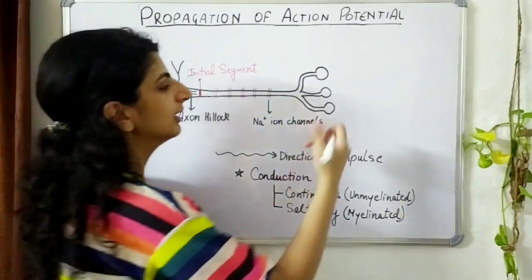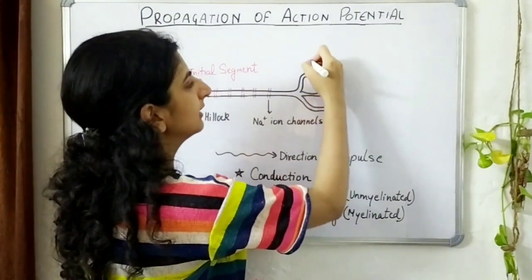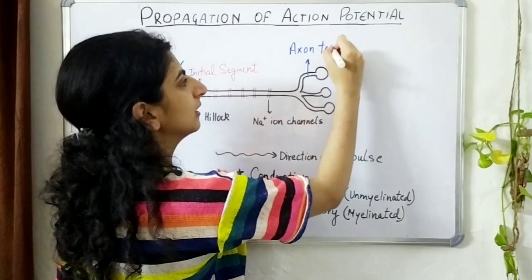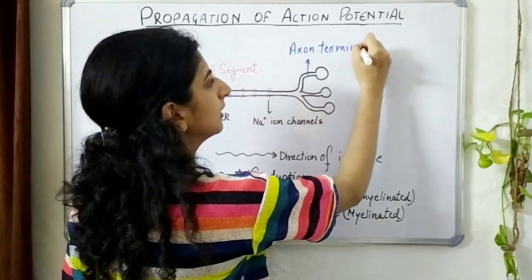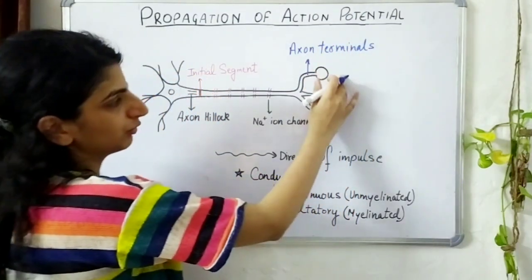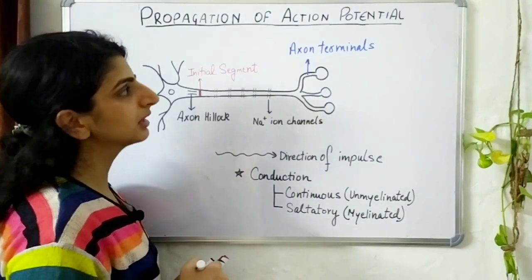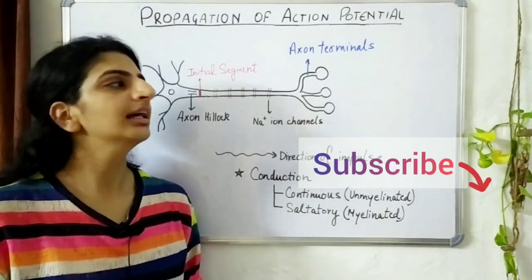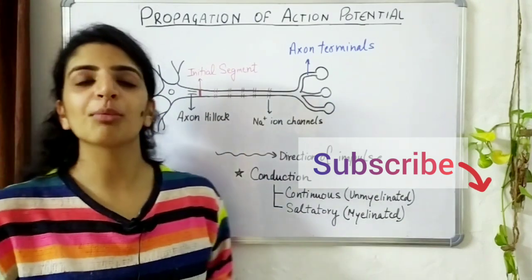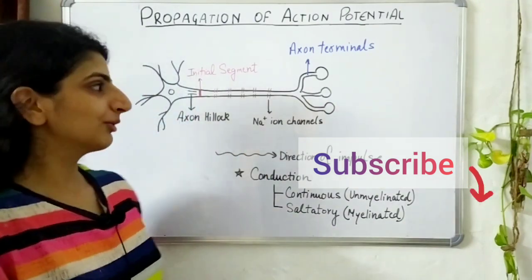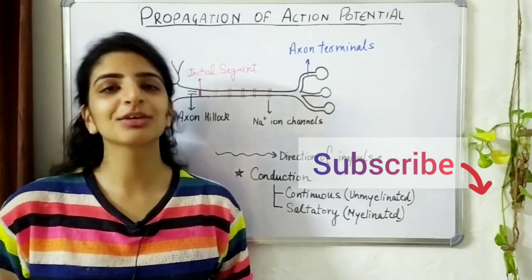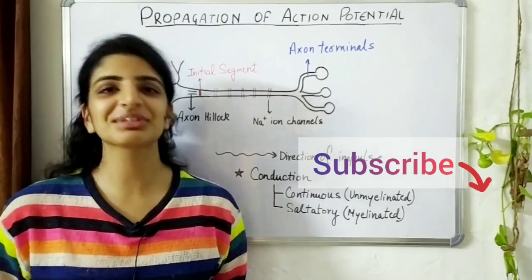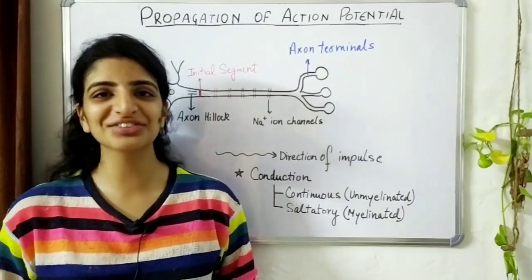This was the propagation of an action potential across a neuron. The action potential has traveled and reached the final axon terminals, and will now move forward from these end bulbs to the next neuron or muscle cell. This we are going to study under the topic of synapse. Hope you liked this explanation — if you did, don't forget to share it with your friends, subscribe, and like this video.